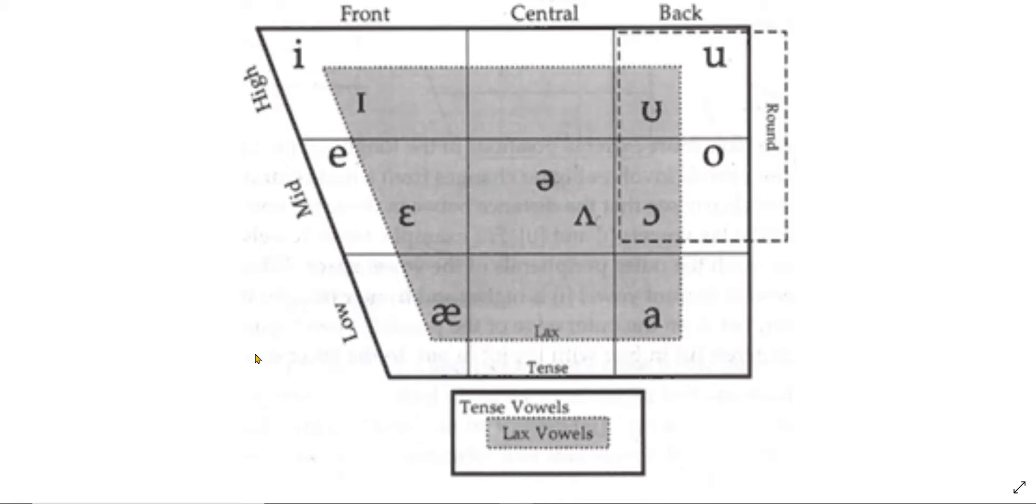You have to think about the tongue, where is the tongue in relation to the oral cavity in the mouth, and then also rounding of the lips. So number one, is the tongue more toward the front, the central, or the back of the mouth when the sound is produced? That would be one thing to think about.